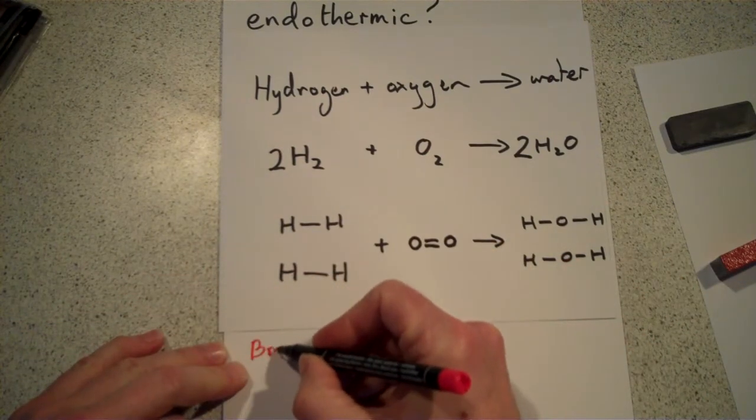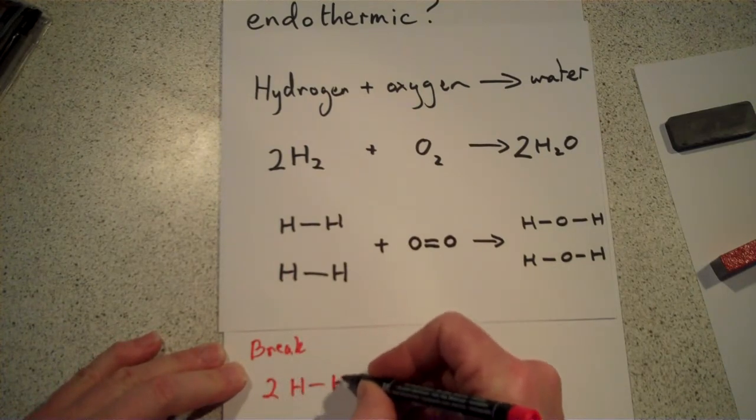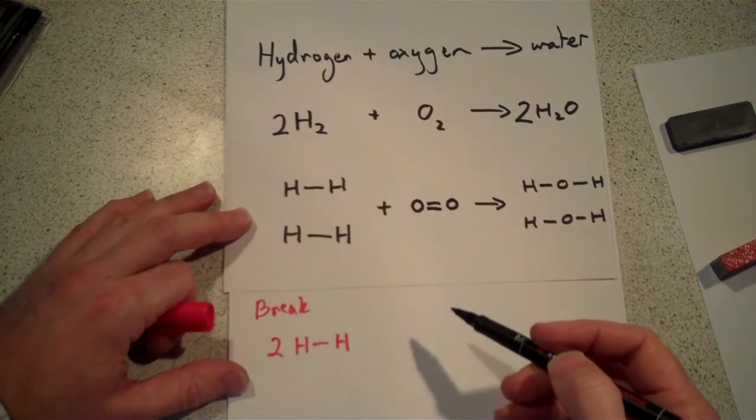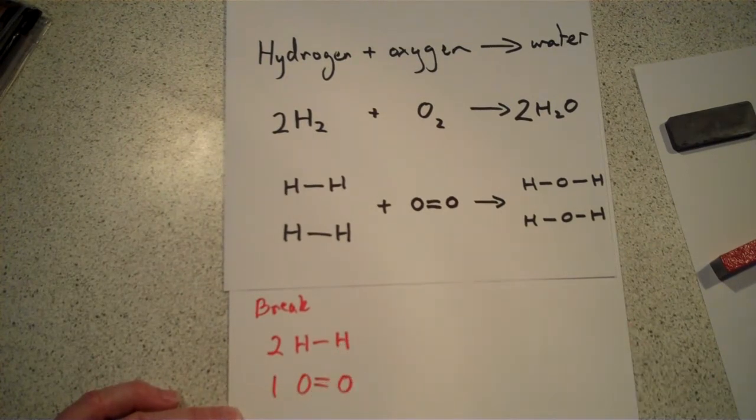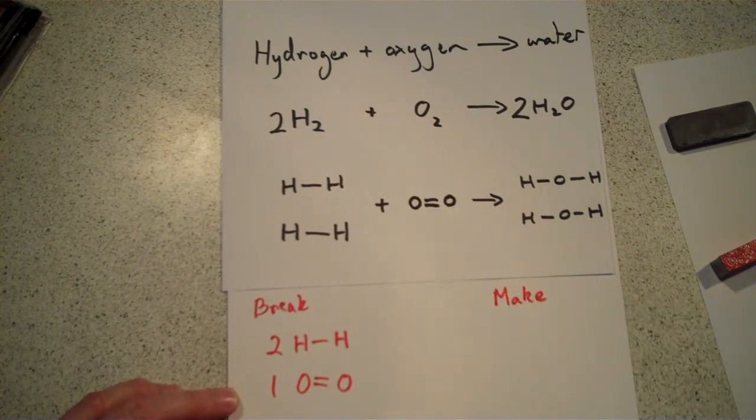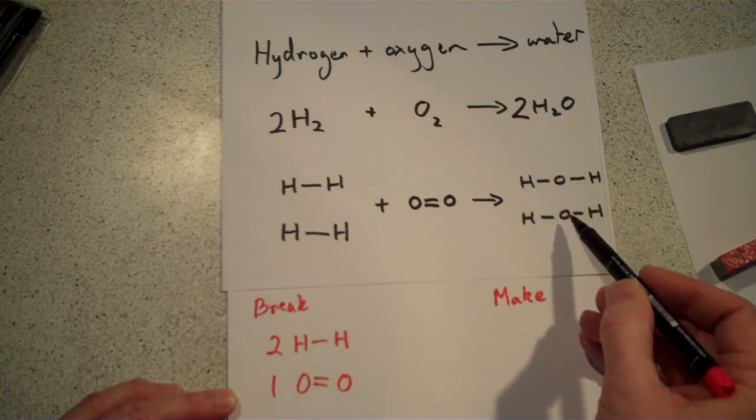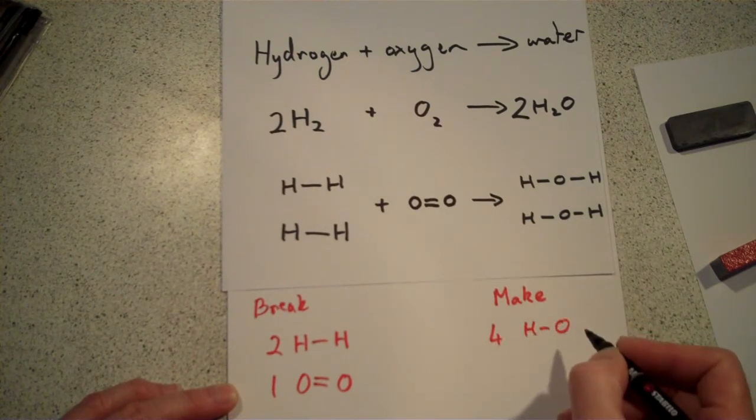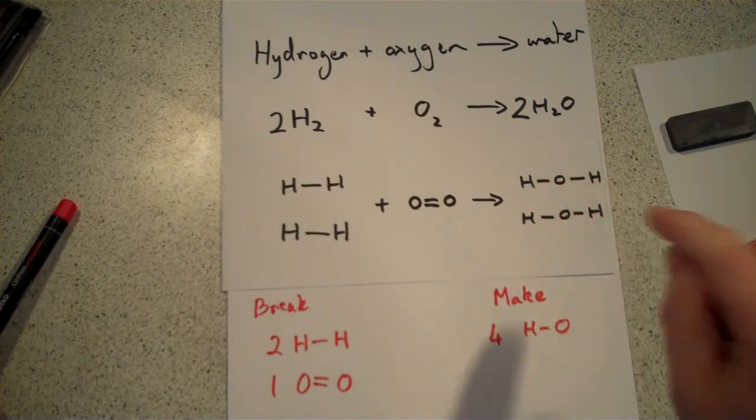Now, having drawn out the molecules so that you can see the bonds in them, you've got a better idea of what we're trying to break. What we're trying to break is two hydrogen to hydrogen bonds. There they are, number one and number two. And we're also trying to break one oxygen-oxygen double bond. And meanwhile, when they come back together, we make, let's have a look, one, two, three, four bonds, where now hydrogen is bonded to oxygen. You could say oxygen is bonded to hydrogen. It doesn't matter which way round you say it. Those four bonds are all the same.